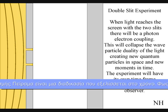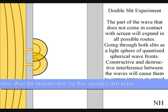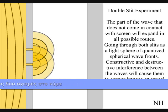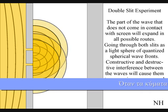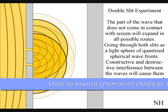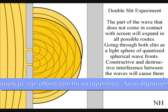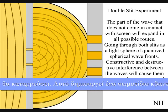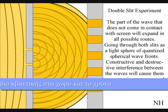The part of the wave that does not come in contact with the screen will expand in all possible routes, going through both slits as two wave fronts. Interference between the waves will cause them to superimpose. When these waves come in contact with the screen, they will collapse, creating quantum particles in space and time in the shape of an interference pattern.